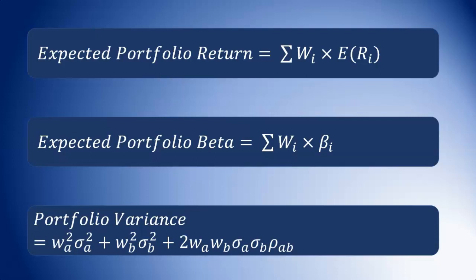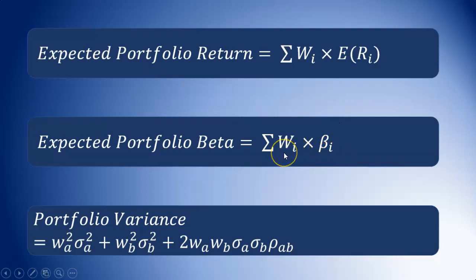For the expected portfolio beta, similarly it's a weighted average of the betas in the portfolio. So it's the weight for each asset multiplied by the beta for that asset. The weight is basically just the percentage allocation — how much of your portfolio is invested in that asset, as a percentage.